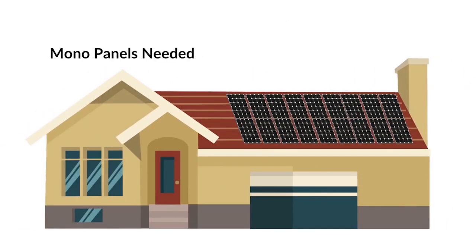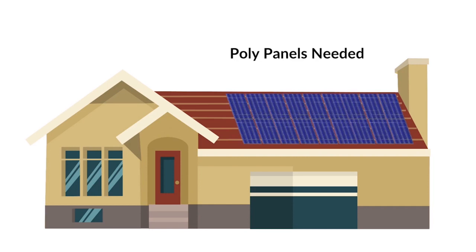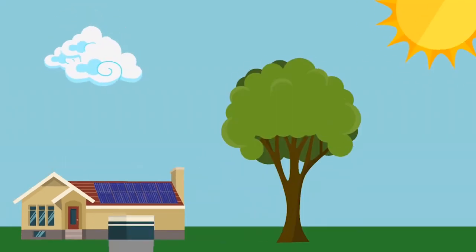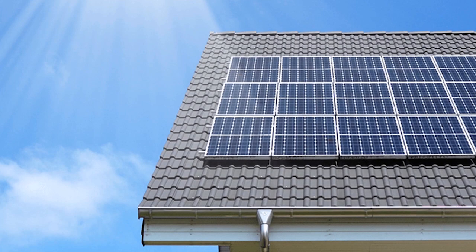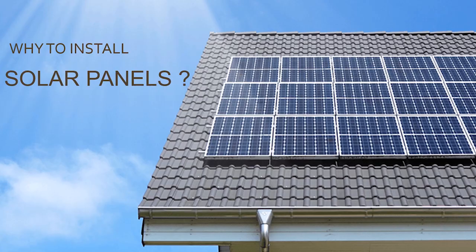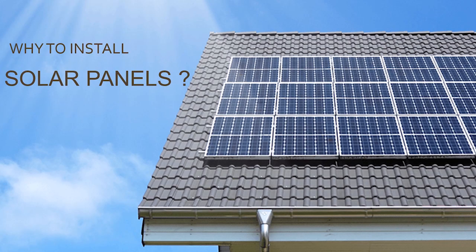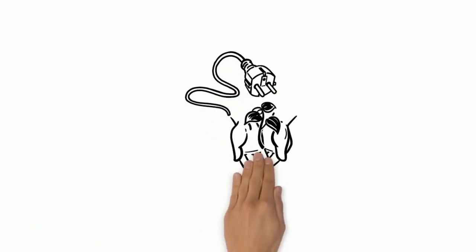Generally speaking, mono panels take up less space to produce the same amount of power as a system with poly panels. Poly panels can gather more scattered rays, such as in shady conditions, while mono panels can gather more energy in low light such as cloudy conditions.